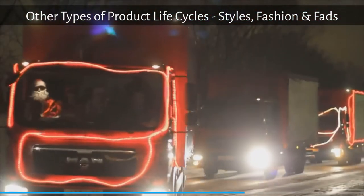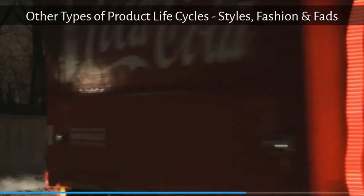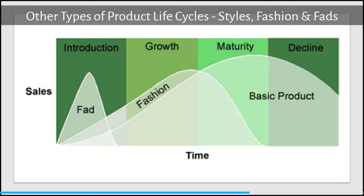We talked about how Coca-Cola has been around for 128 years and is currently in the maturity stage. However, not all products are so lucky. Here are examples of three other life cycles for three very different types of products.